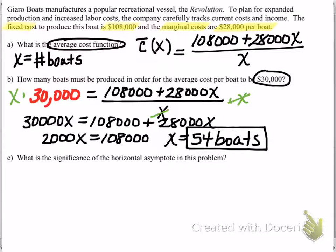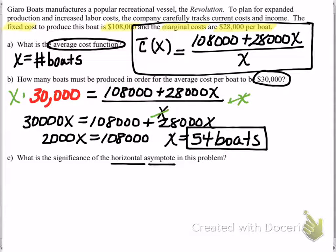Part C. What is the significance of the horizontal asymptote in this problem? So we have to come up here to our average cost function, and we need to notice a few things. First of all, the type of function that this is. So remember, we have a polynomial function in the numerator because this is x raised to the first power, as well as a polynomial in the denominator. So because this is a polynomial divided by another polynomial, the type of function we're looking at, or analyzing here, is a rational function.